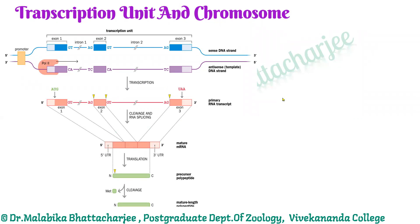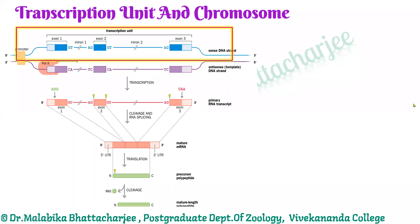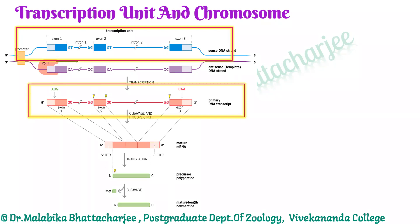Since we are moving on to sex determination, and sex determination is controlled by production of a number of proteins, this is just a recapitulation of what you did in SEM 1. When we think of a transcription unit, we know that the two strands of DNA separate. One strand acts as the sense strand and the other as the antisense strand or the non-coding strand. Taking the non-coding strand as the template, the sense strand is copied, and we get a copy of the primary RNA transcript.